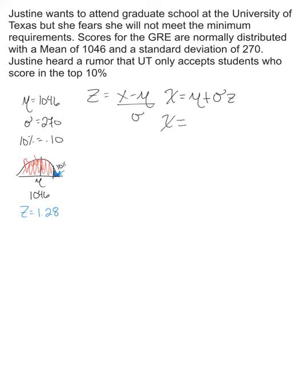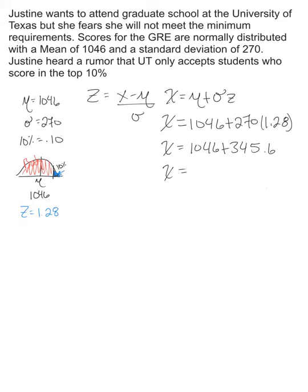We're trying to find the raw score she needs to qualify for the top 10%. The mean mu is 1,046, the standard deviation is 270, and the Z score is 1.28 — corresponding to the top 10% in the tail. So we calculate: 1046 plus 270 times 1.28 equals 1046 plus 345.6, giving a raw score of 1,391.6.